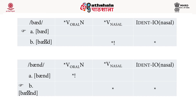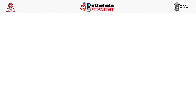For input /band/, the two candidates are [band] (oral vowel) and [bæ̃nd] (nasal vowel). Candidate [band] has an oral vowel followed by a tautosyllabic nasal, so it violates the contextual markedness constraint — a fatal violation. Candidate [bæ̃nd] has no fatal violation: the contextual markedness constraint is satisfied, and it only violates IDENT-IO(nasal). Although [bæ̃nd] has two violations, it is the optimal candidate because it incurs no fatal violation of a higher-ranked constraint.